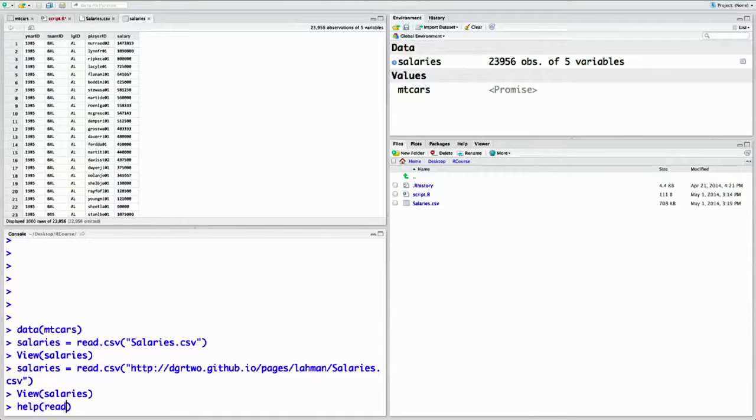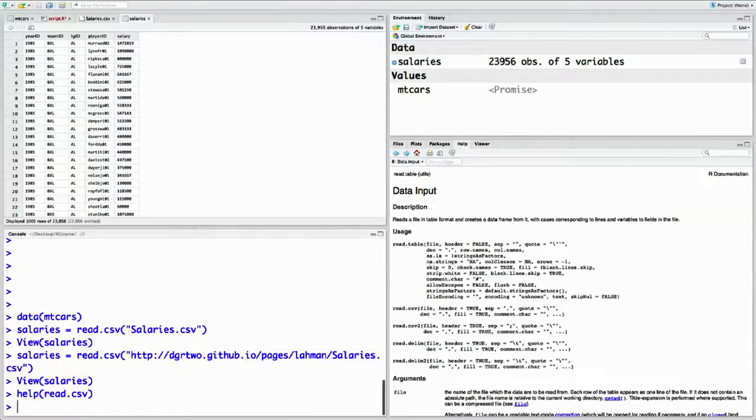Now this was an easy way to read this standard csv file but what if you didn't have a header row or what if your file was separated by spaces or by tabs instead of by commas. Well take a look at the help page for read dot csv. Help read dot csv. See here that there are multiple functions that work just like read dot csv that each take a different set of defaults and options.